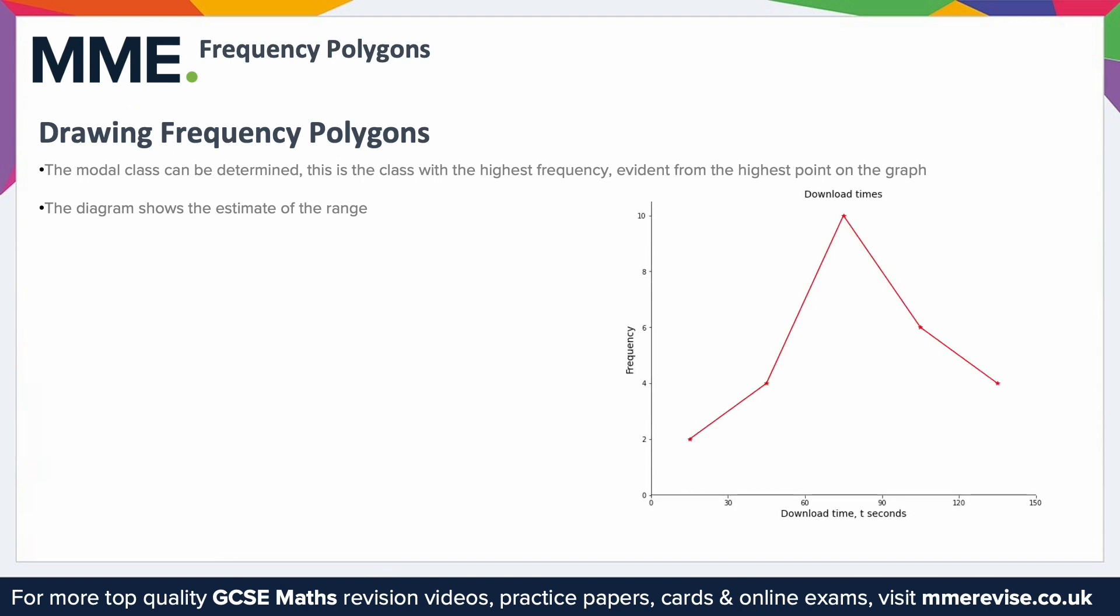The modal class is the one with the highest frequency, the highest point. So on this one, you can clearly see that that's this point here. So that's the midpoint of the class that goes between 60 and 90. So our modal class for this one would be, if download times t, it's going to be 60, so t is greater than 60, or less than or equal to 90.